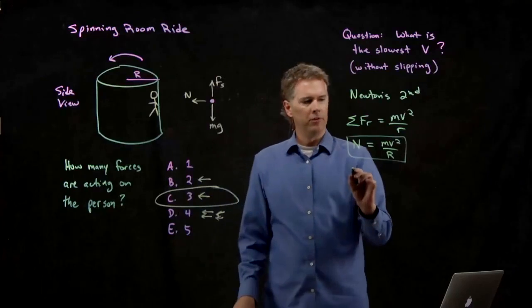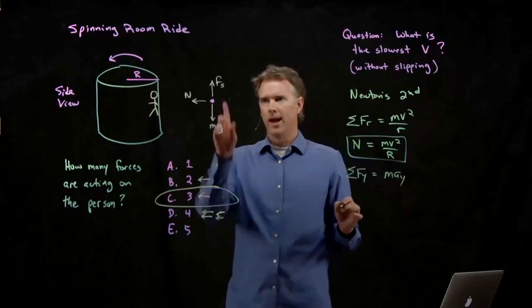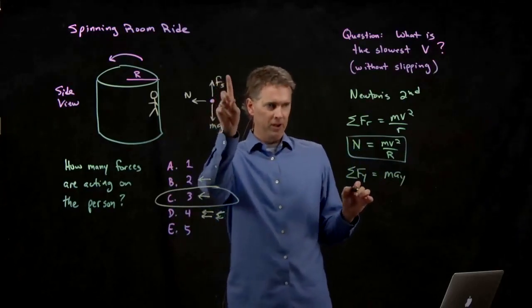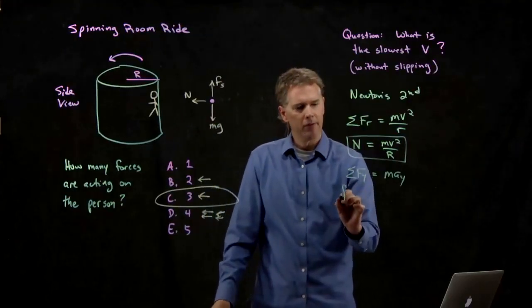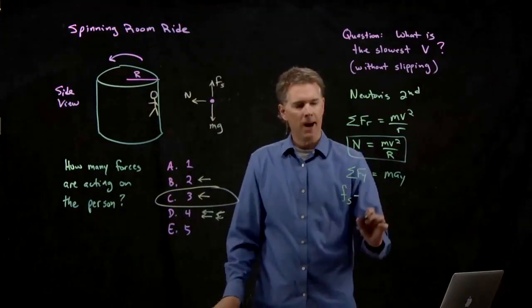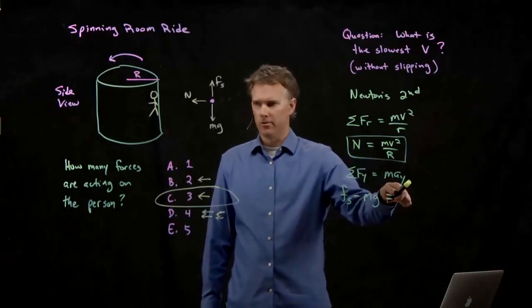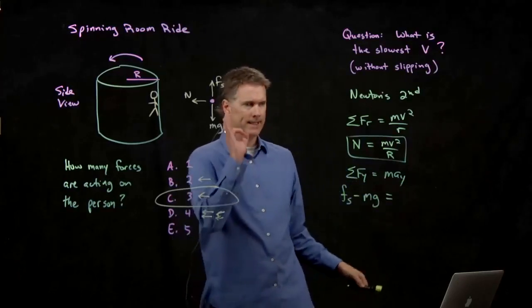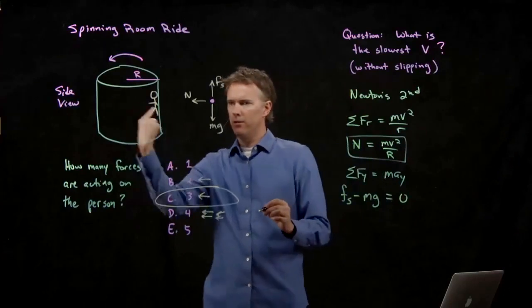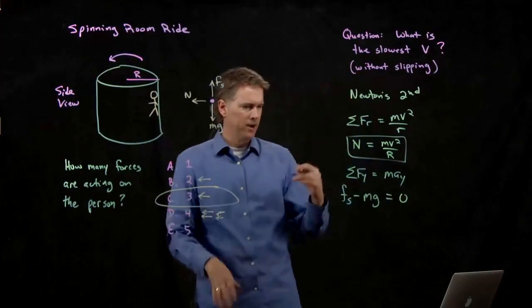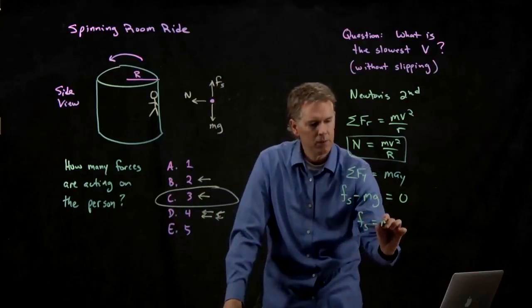For the vertical forces, we of course have two forces. We have the frictional force holding us up. We have MG trying to pull us down. And so we get F sub S minus MG equals what? What's the acceleration in the vertical direction? Zero. Right? If you're moving around in this horizontal circle, you're not going up or down. And so we just get F sub S equals MG.